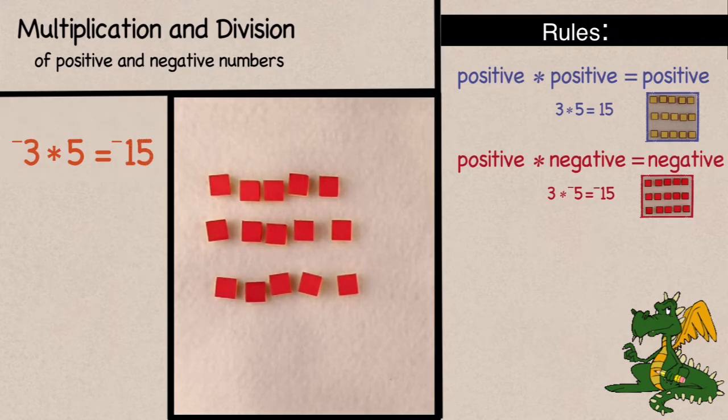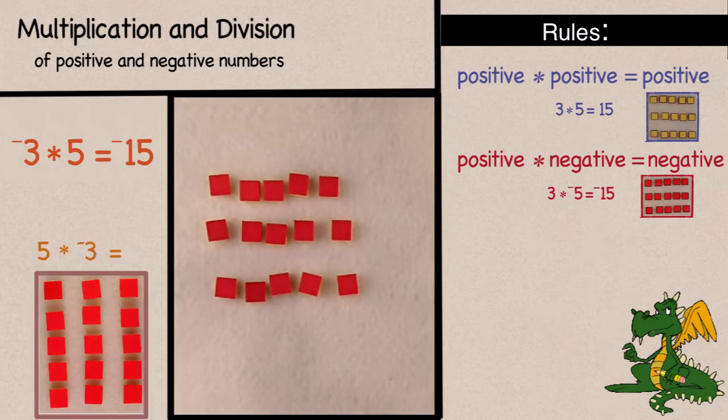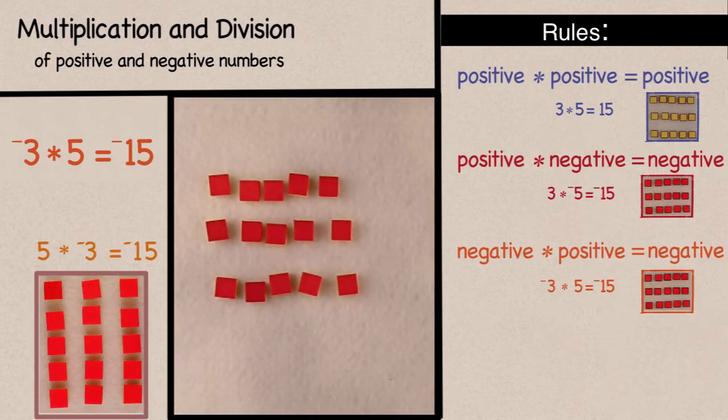That answer makes sense. Since it doesn't matter what order you multiply the numbers in, we could have written the problem as 5 times negative 3, and we'll get negative 15. Either way I looked at the problem, the answer is still negative 15. And we can say that if we're multiplying a positive number and a negative number, the answer will be negative.